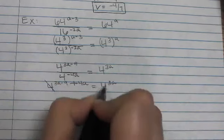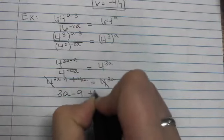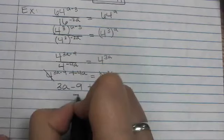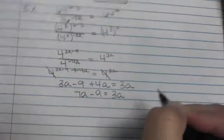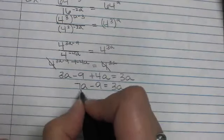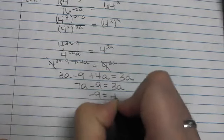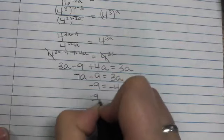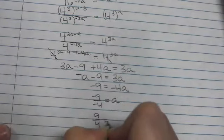And I'll go ahead and get rid of the bases. And so I've got 3a minus 9 plus 4a equals 3a. So that's 7a minus 9 equals 3a. I'll get the a's all to the right side, so I'm minusing the 7a over. So I have negative 9 equals negative 4a. And I'll go ahead and divide by negative 4, and so that's positive 9/4 equals a.